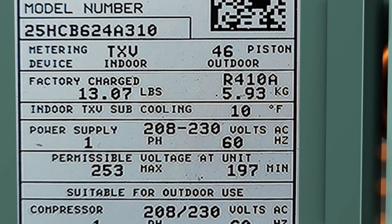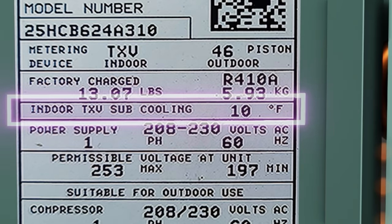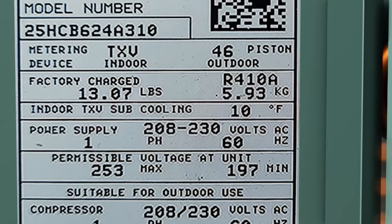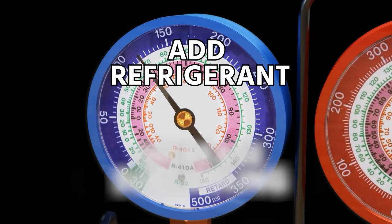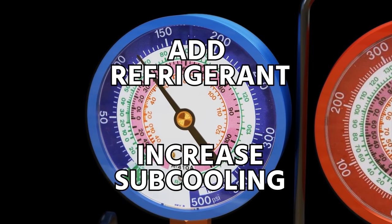So because if we go back to our data tag, we can see that our target is 10 degrees, and we only have 5 degrees, that means that we need to add refrigerant in order to increase our subcooling. So we're going to add refrigerant to increase our subcooling.